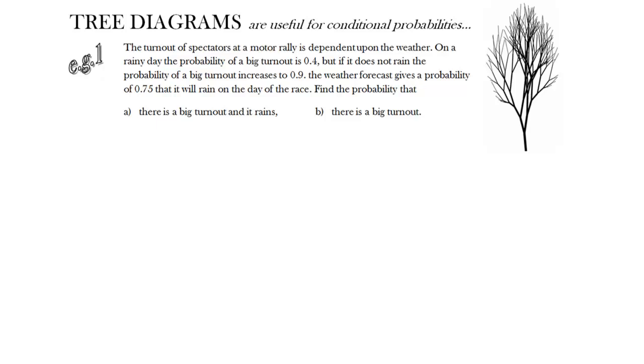So we'll start off with this example straight into it. We've got some event, a motor rally, and the number of people that come will depend on the weather. So if it's a rainy day, there's a low probability of a big turnout, only 0.4. But if it doesn't rain, the probability of a big turnout is much greater, 0.9. And the likelihood of rain on the day of the race is 0.75. That's all the information we have, and the first thing we want to know is the probability that there is a big turnout and it rains.